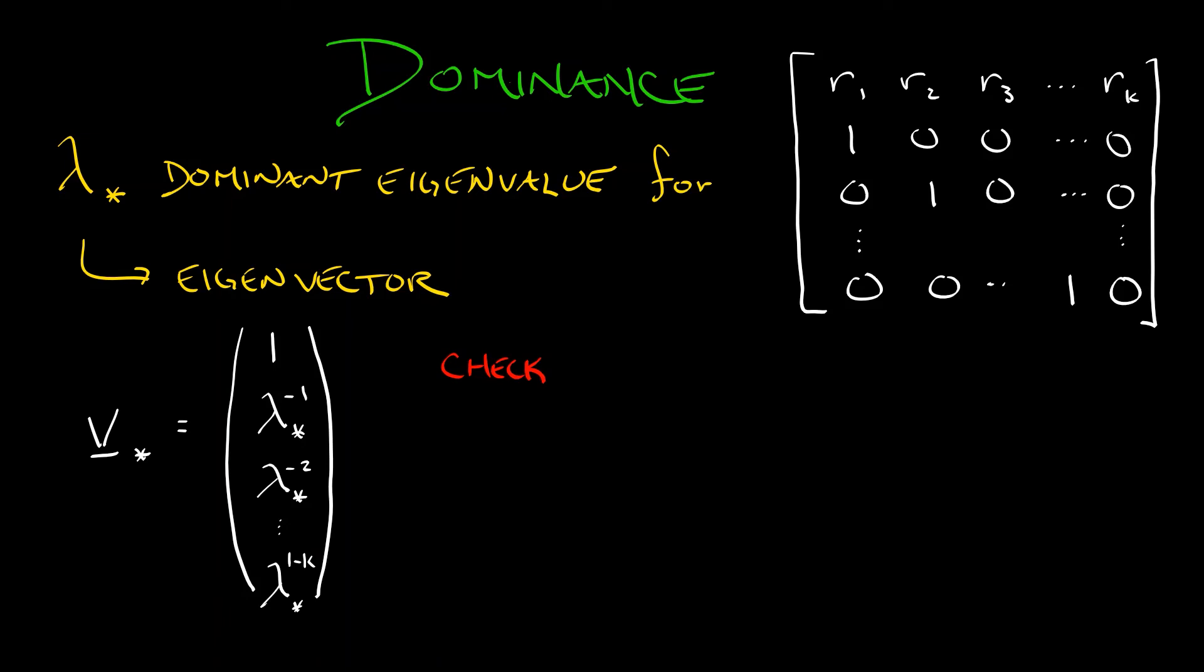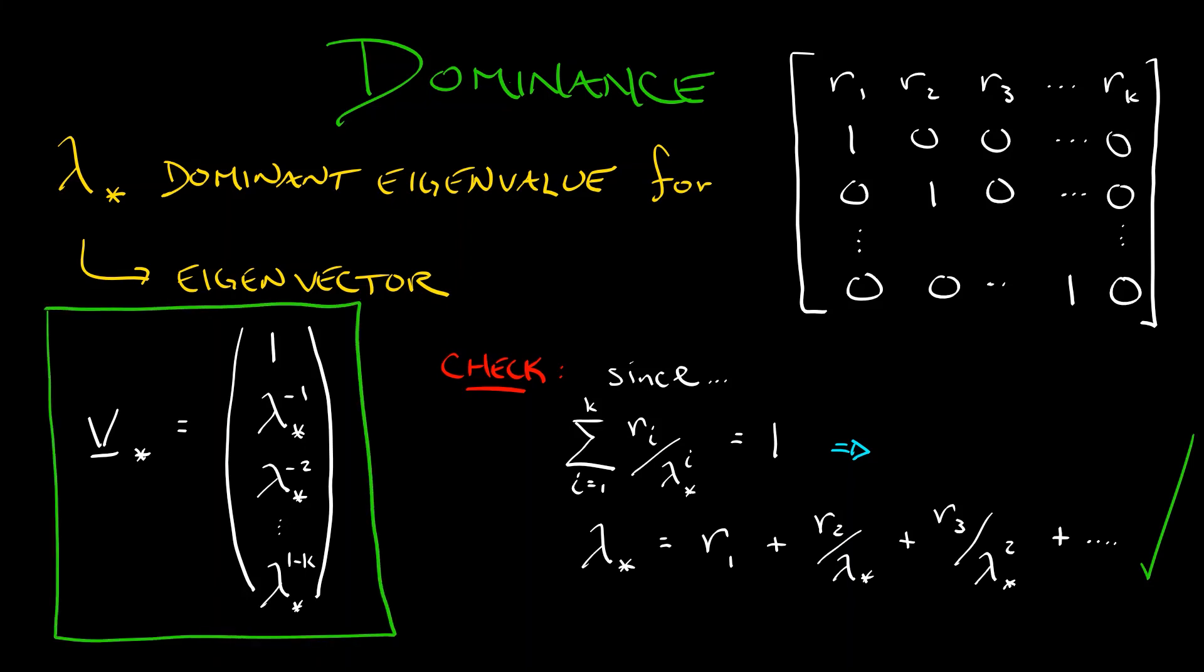The way that I get this is I use the characteristic polynomial. Since the sum i goes from one to k of r sub i divided by lambda star to the i is equal to one. If I take that equation, multiply through by lambda star, then that one turns into lambda star and then that sum turns into r1 plus r2 divided by lambda star plus r3 divided by lambda star squared, et cetera. If you take this putative dominant eigenvector, hit it with that matrix, then that first row of r sub i is giving you this exact formula and you can see that this is in fact an eigenvector for this matrix with this dominant eigenvalue lambda star. And that's really important.